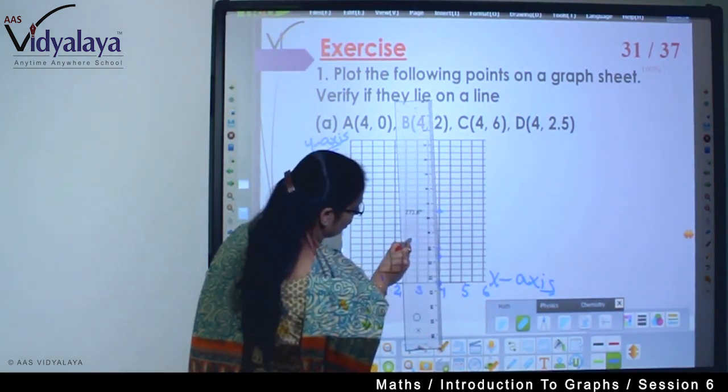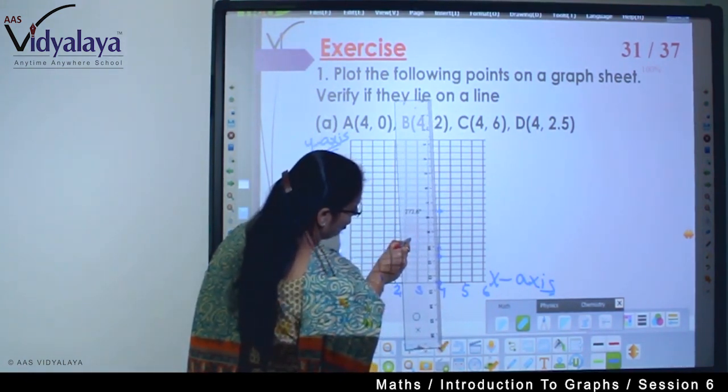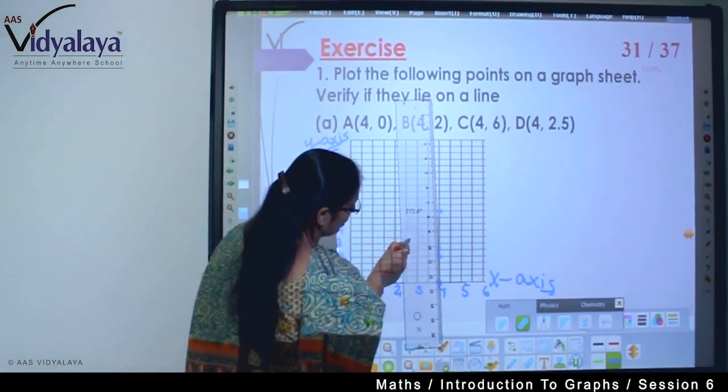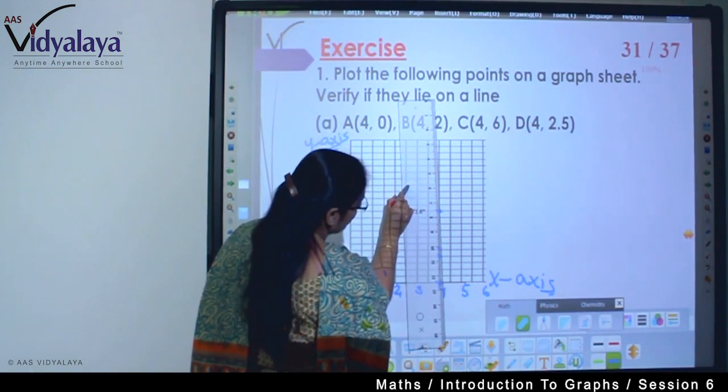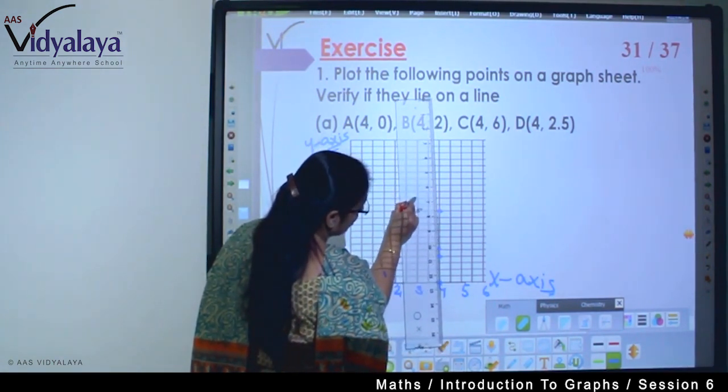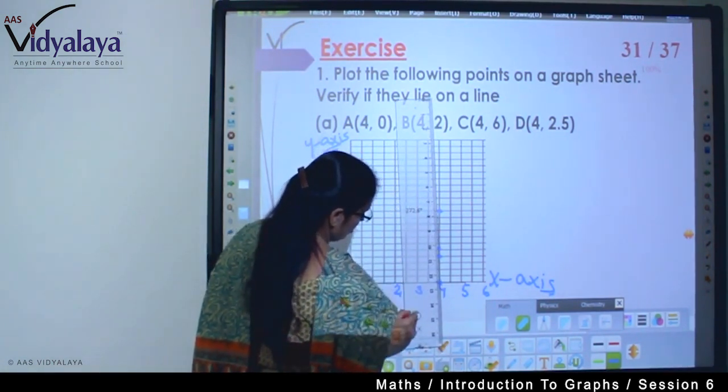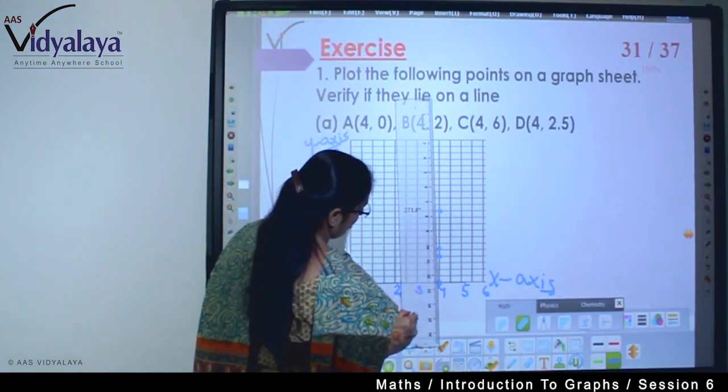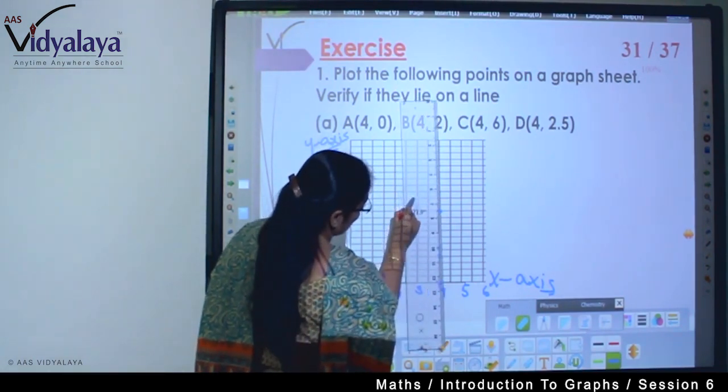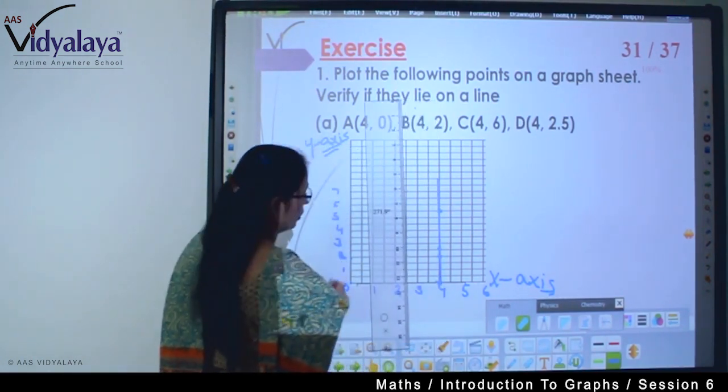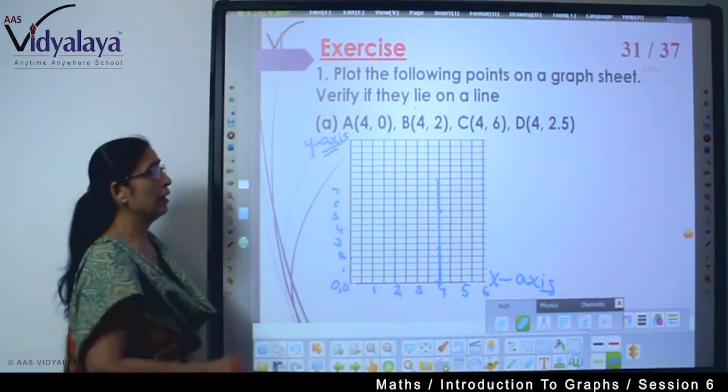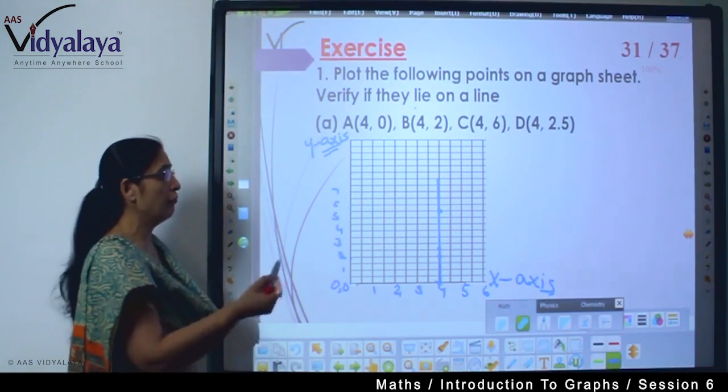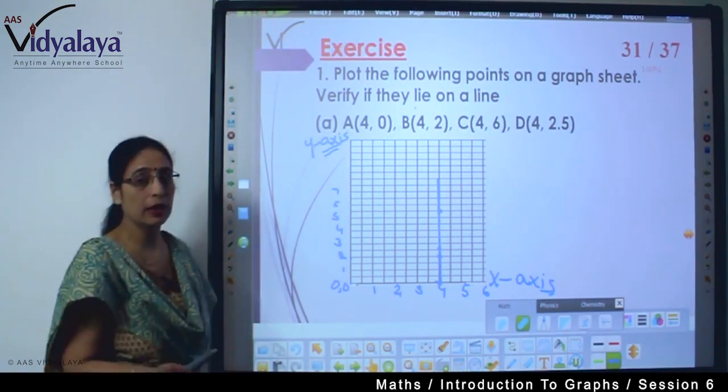You put the scale where the line should be and join it this way. What are they asking? Verify if they lie on a line - we have verified, they lie on a line.